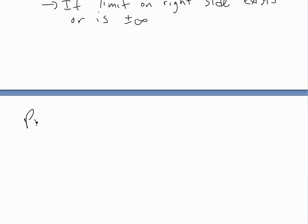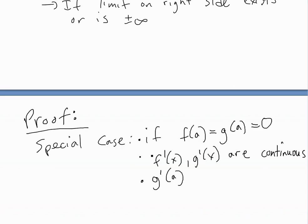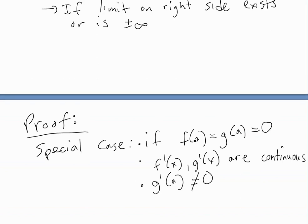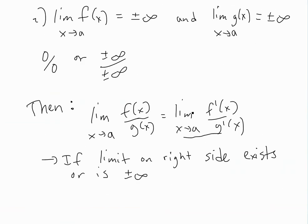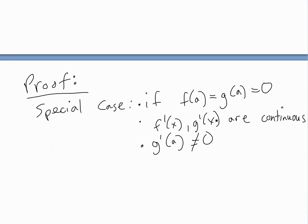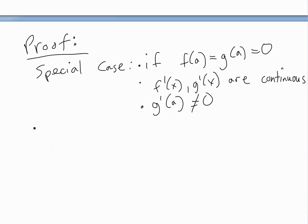Now to prove this, let's first do a special case proof — this one is fairly easy to do. In this special case, if you have f(a) and g(a) both equal to 0, and the derivatives are both continuous and g'(a) is not equal to 0, then as opposed to working with limits approaching 0, since they actually do equal 0 and the functions are continuous, you can prove it like this.